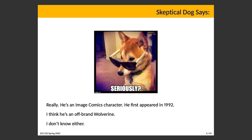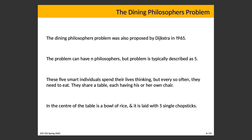Skeptical Dog has the correct version. He first appeared in 1992 as an Image Comics character. I've got nothing to explain why or what he's for. So, we've previously talked about deadlock, and I gave an informal definition: deadlock is what happens when some threads get stuck and they get stuck forever — they will never get unstuck because there's nothing that can make that happen. We need a more formal definition, and our best way of getting there is to talk about our third classical synchronization problem: the Dining Philosophers Problem.